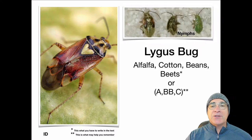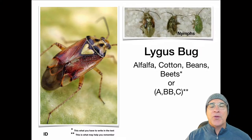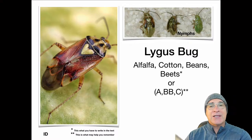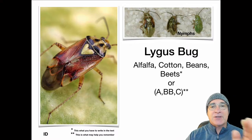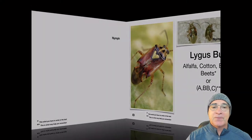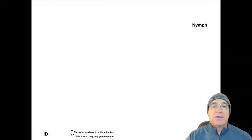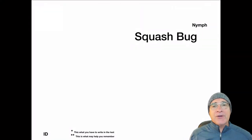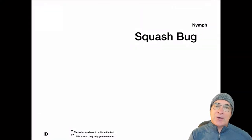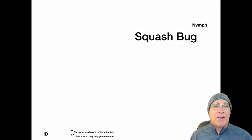And then of course the nymphs — the second, third, and fourth instar. You can see as they're progressing, they're looking more and more like the adult phase. Understand that while we're looking at these, we're looking at both the adult forms and the nymph form as well. You have to sometimes identify the larvae or the nymphs when you're looking at this.